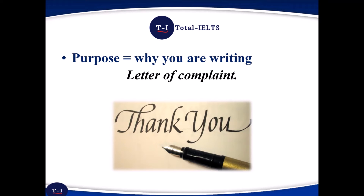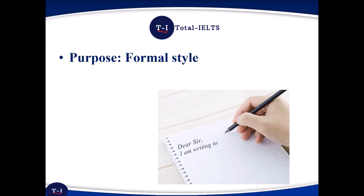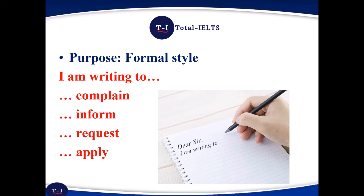Let's start with the purpose — this is basically why you're writing. It's very important to state a clear purpose in all General Training Writing Task 1s. Failure to do so will again result in a band four in task achievement. Your purpose here is the formal style, so for this type of letter it's quite simple to begin by stating something like: I am writing to complain, or inform, request, or apply.